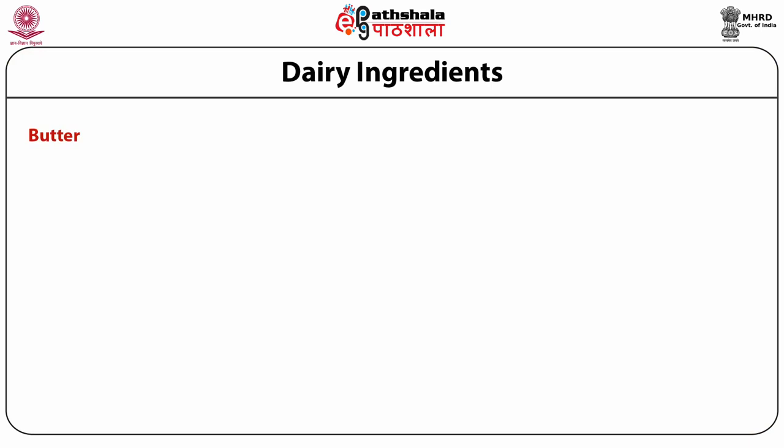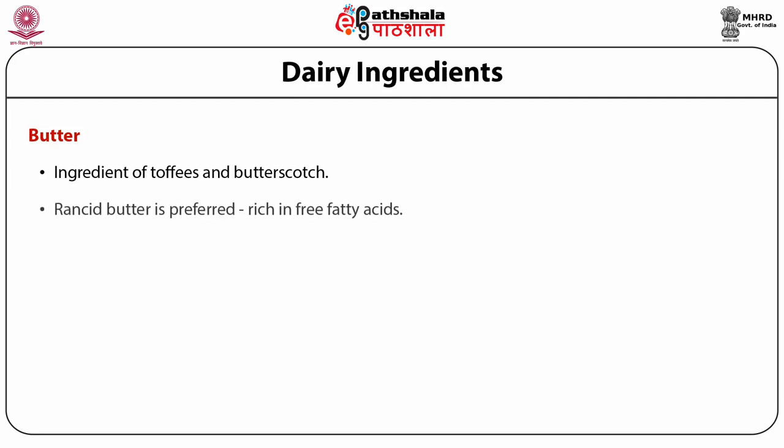Since lipolytic activity shortens the shelf life of product or renders it totally unacceptable among consumers, palm kernel oil or, broadly speaking, lauric fats are generally not employed in the confectionery industry. Butter is used mainly as an ingredient for toffee and butterscotch. Any type of sweet cream or lactic butter can be used to make toffee, but traditionally rancid butter is preferred over the rest if available, as it is rich in free fatty acids.